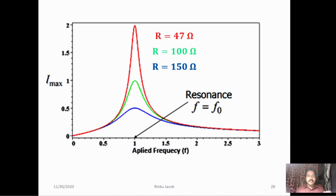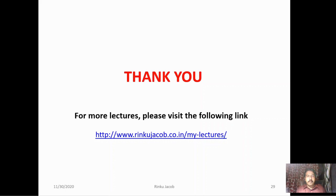By doing this experiment we study the effect of damping on a forced electrical oscillator using a frequency response graph. It is seen that as we increase the damping by increasing the resistance in the LCR circuit, the sharpness of the frequency response curve decreases, and this is quantified using the quality factor or Q factor. Thank you. For more lectures please visit the following link.